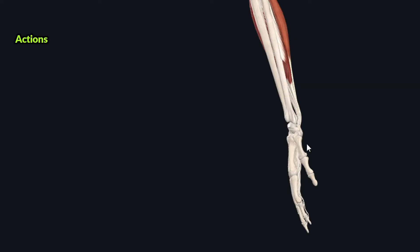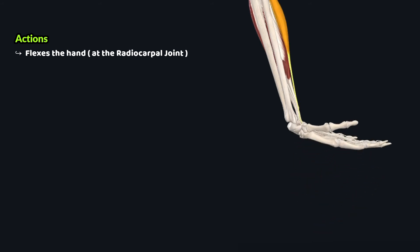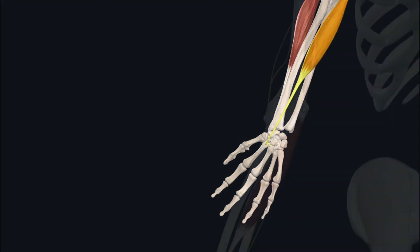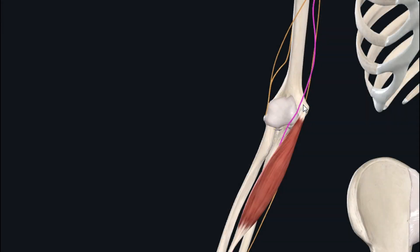As its name suggests, the flexor carpi radialis flexes the hand at the radiocarpal joint, also called the wrist joint. This muscle also abducts the hand at the radiocarpal and midcarpal joints. The flexor carpi radialis muscle receives its innervation from the median nerve.